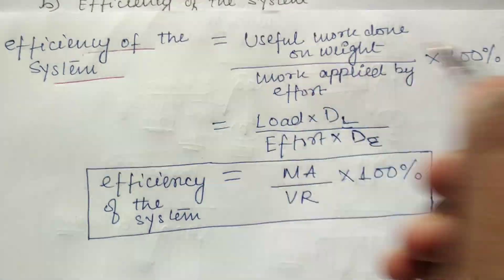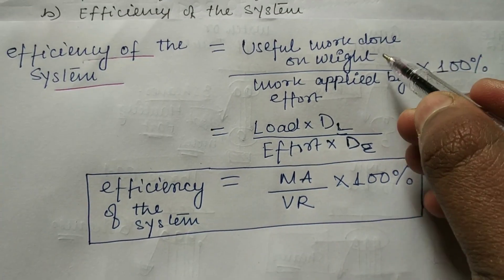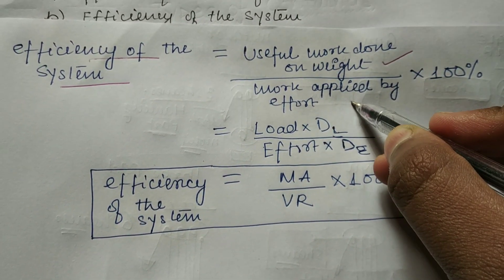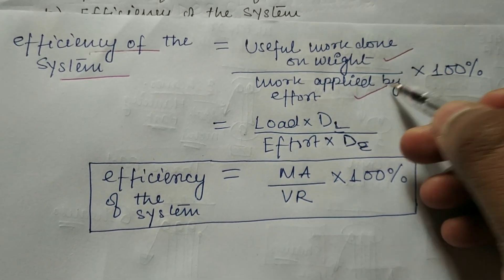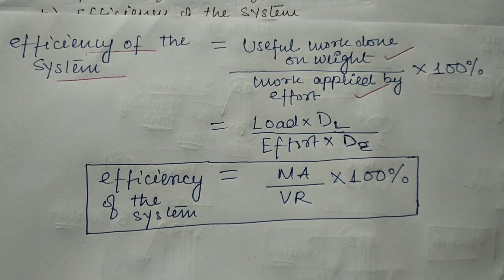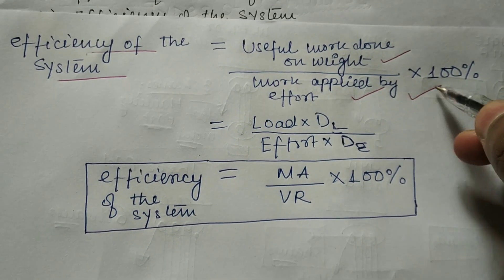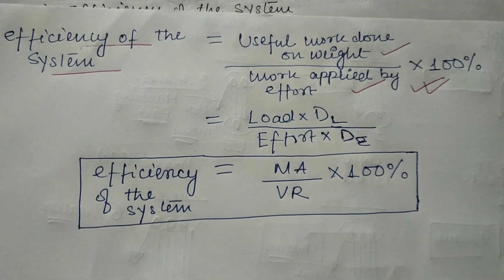As you all know, efficiency is equal to the useful work done on the weight divided by the useful work done by the effort. Efficiency is expressed as a percentage, so we multiply by 100 to get the efficiency in percentage.